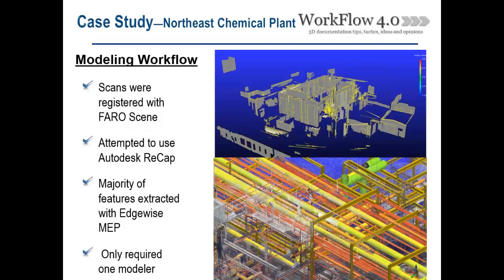Looking at the building, the software identifies planes in the laser scan and from those you can build your wall geometry. Pipes are an even better workflow. If you've ever had to look at a laser scan and trace pipe in a model, it can be extremely time-consuming and quite boring. What Edgewise does is use algorithms to automatically extract 70%, 80%, 85% of those pipes, with the rest being a cleanup process. This gives a significant bump in time savings for modeling.